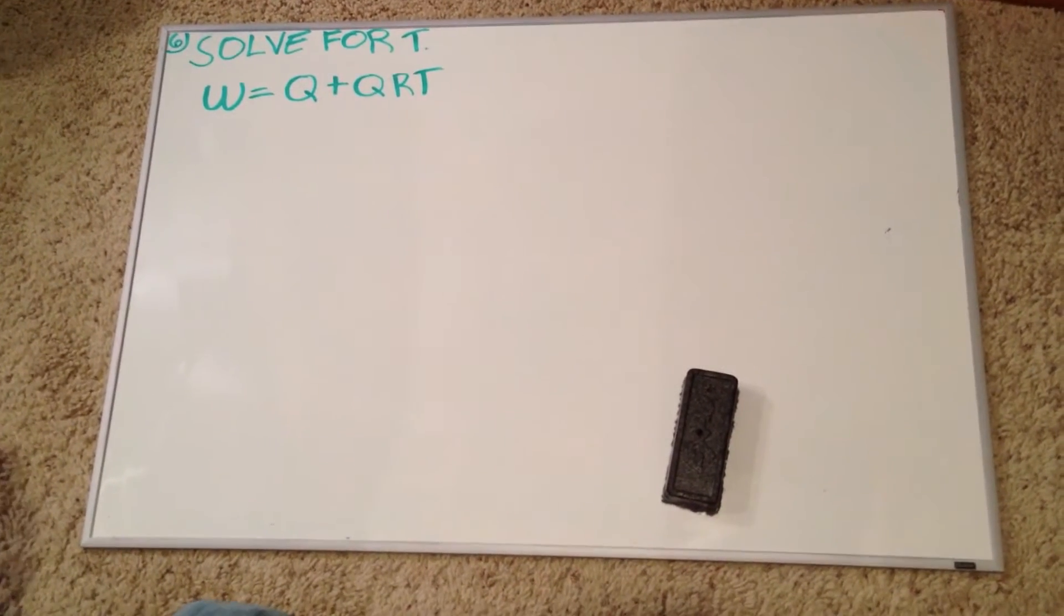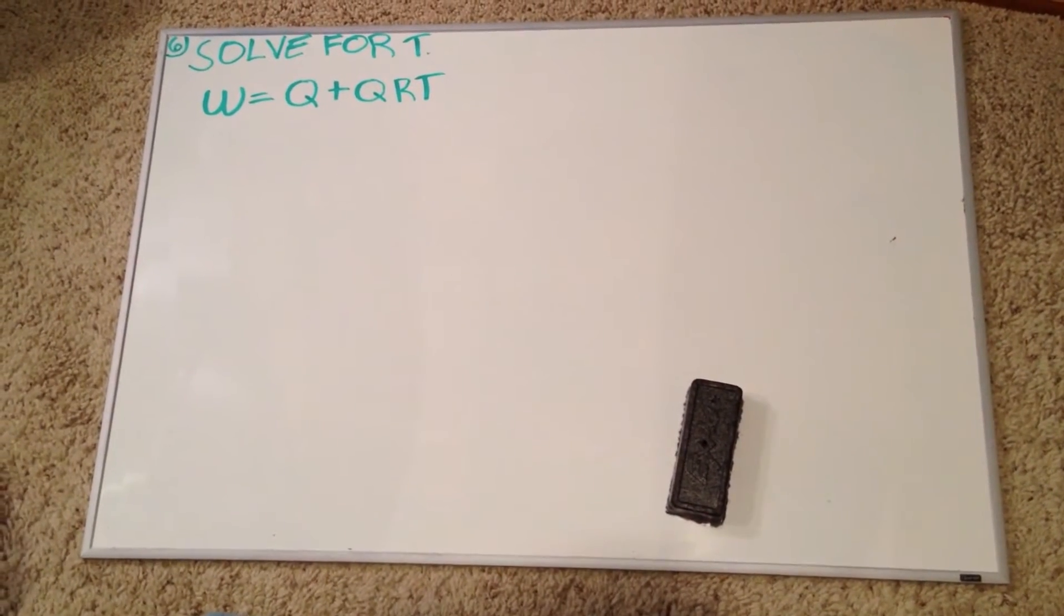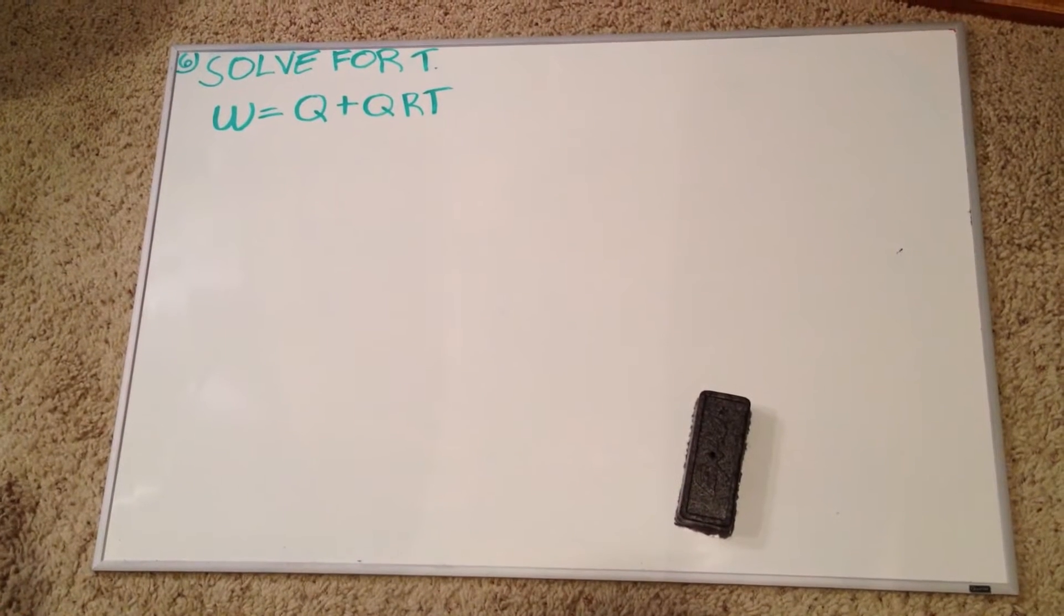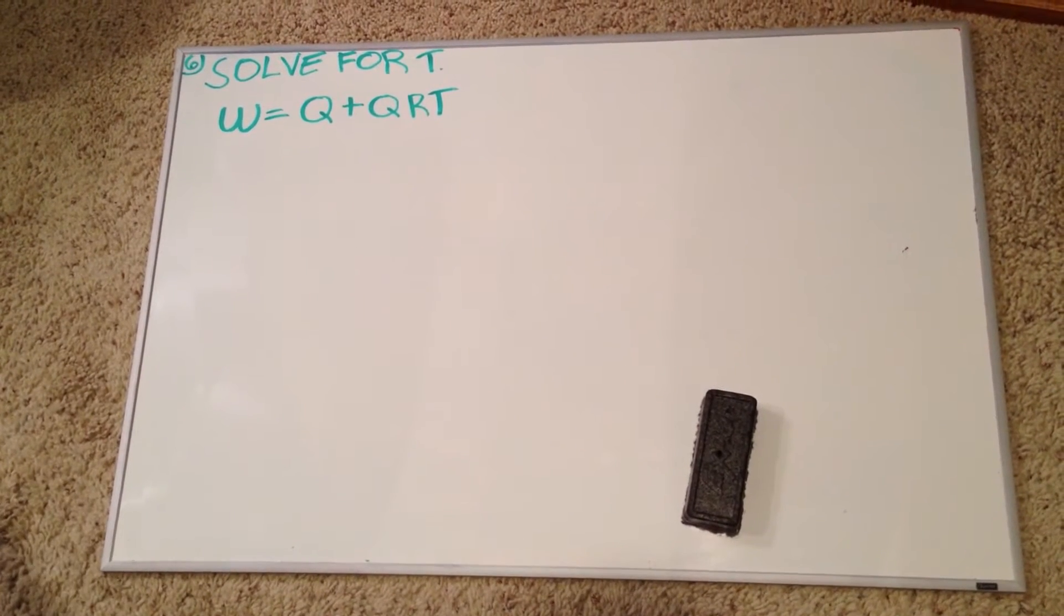Okay, so today our instructions are to solve for the letter T. Our problem is W equals Q plus QRT.